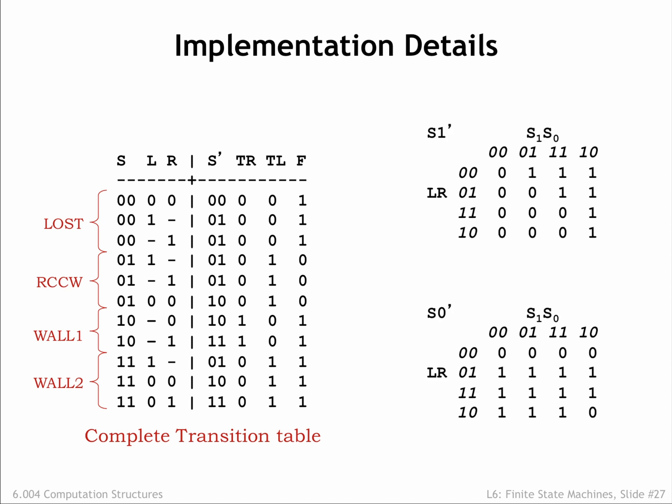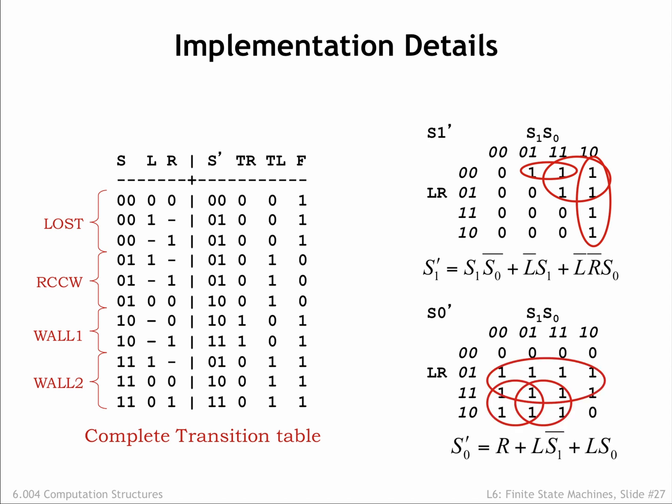Here are the Karnaugh maps for the two next state bits. Using our k-map skills from chapter 4, we'll find a cover of the prime implicants for S1 prime and write down the corresponding product terms in a minimal sum of products equation. And then do the same for the other next state bit.